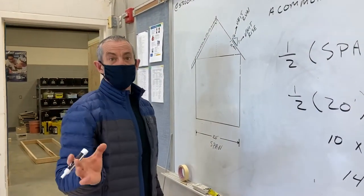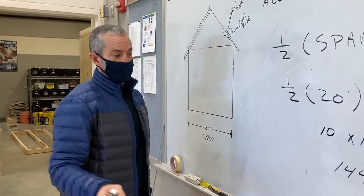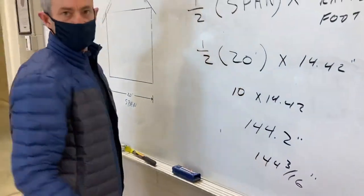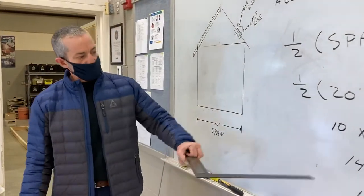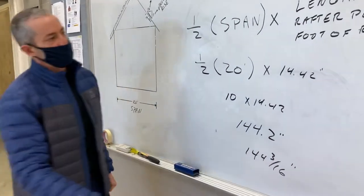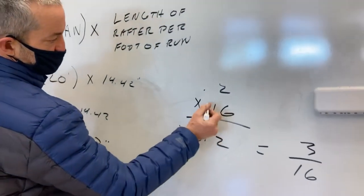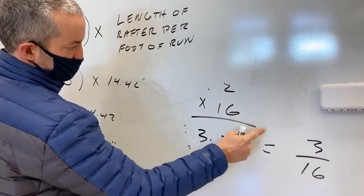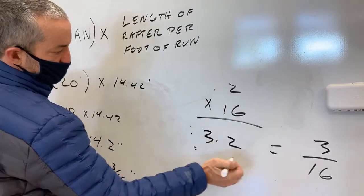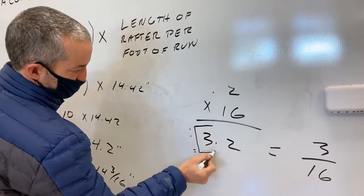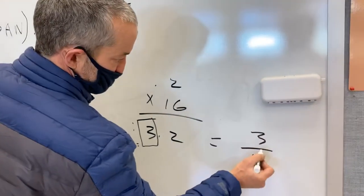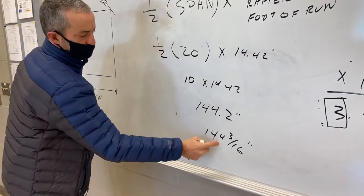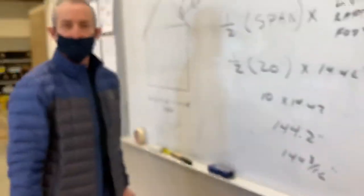The most complicated thing at this point is taking 0.2 inches and converting it into a fraction so that we can read it on our tape measure. So how I do that is I come over here, and since we work in 16ths of an inch, I take 0.2, I multiply it by 16, I get 3.2. I take the number to the left of the decimal, and I put it over 16, 3 over 16. My answer is 144 and 3 sixteenths inches.